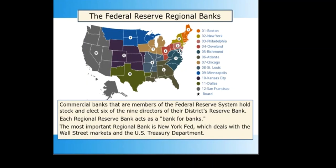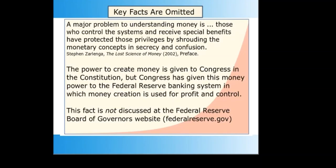Once you realize that a cartel controls the issuance of money — who gets funded and for what purpose, and who does not get funded — you do not need any conspiracy theory. The manipulation and control is designed for the advancement of the cartel and is built into the rules and operations of the cartel. A major problem to understanding money is that those who control the system and receive special benefits have protected those privileges by shrouding monetary concepts in secrecy and confusion. The source of money is rarely, if ever, discussed in the corporate media.